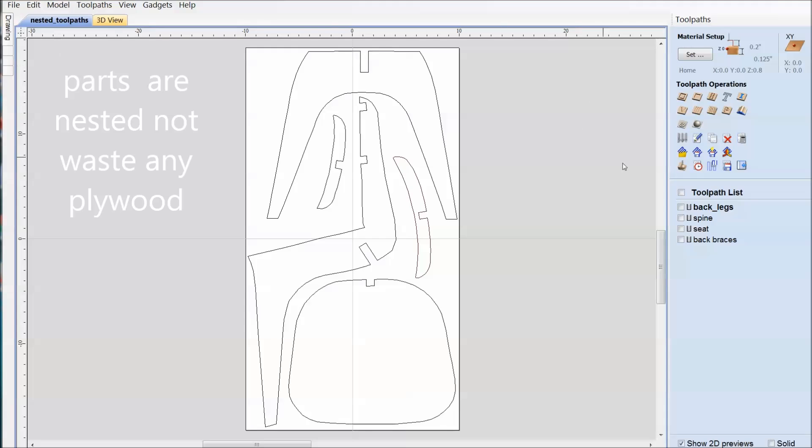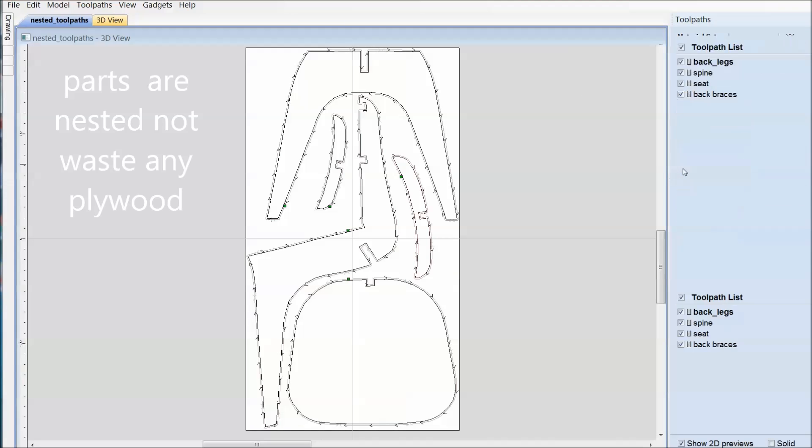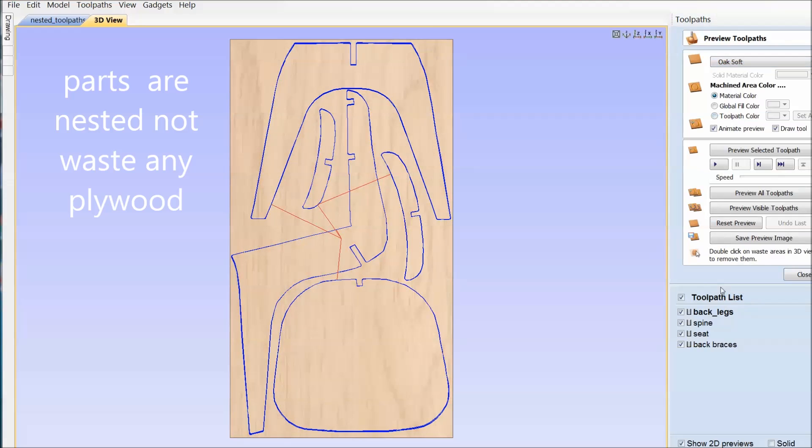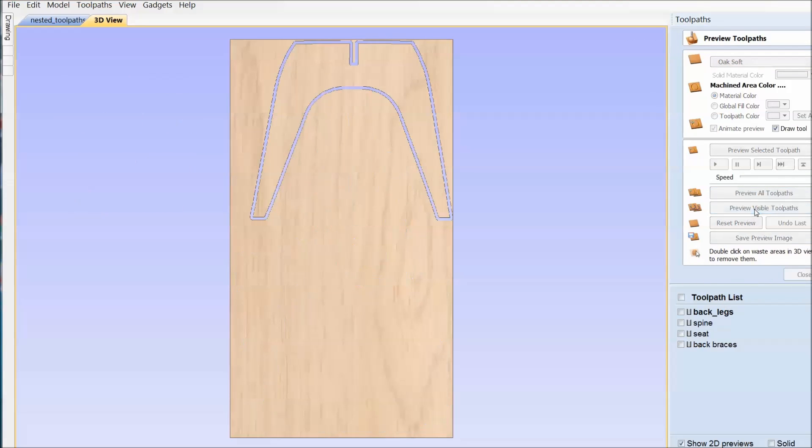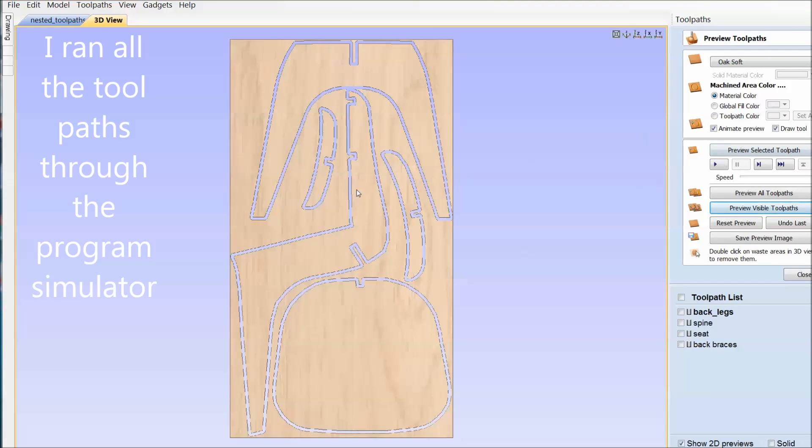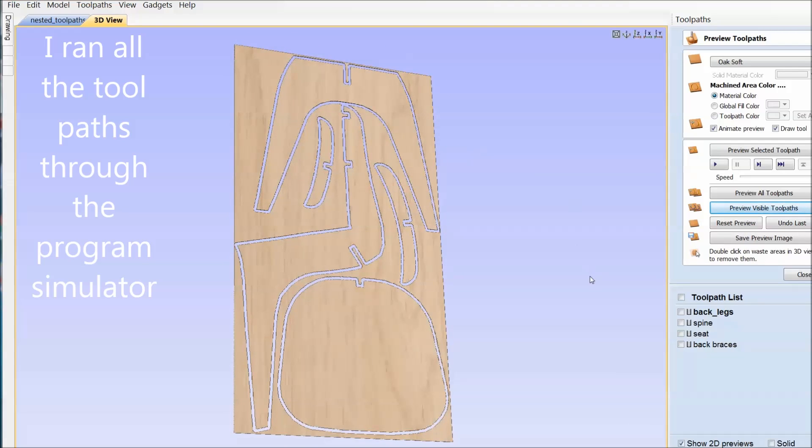Here I've arranged all the parts. I've nested them to get the best cut out of the smallest part of that 4x8 sheet. I also run the program simulator. It shows me how the parts are all cut out, make sure that there's nothing overlapping.